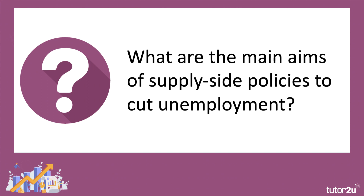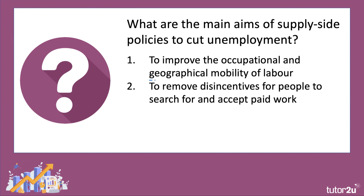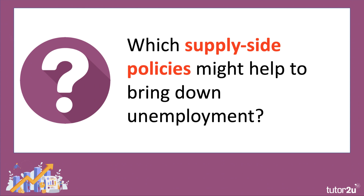The second main group of policies are supply-side policies designed to bring down unemployment. The main aims of supply-side policies are to improve the occupational and geographical mobility of labor, and also to improve incentives — or remove disincentives — for people to search for and accept paid work.